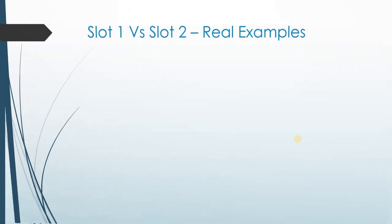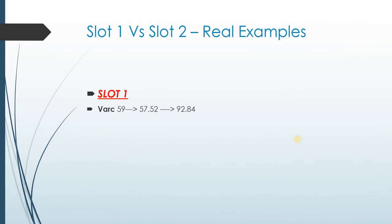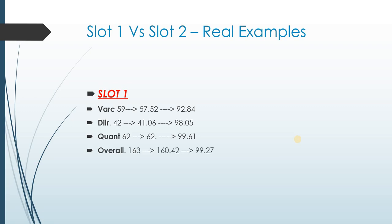Here's a real example from Slot 1: VARC score of 59 was scaled down to 57.52, with a percentile of 92.84. DI/LR score of 42 was scaled down to 41.06, with a percentile of 98.05. Quant score of 62 remained the same with a percentile of 99.61. Overall score of 163 was scaled down to 160.42, achieving a 99.27 percentile — showing the scaling disadvantage for Slot 1.